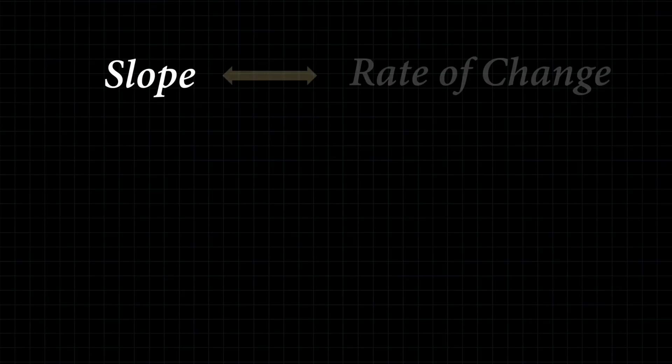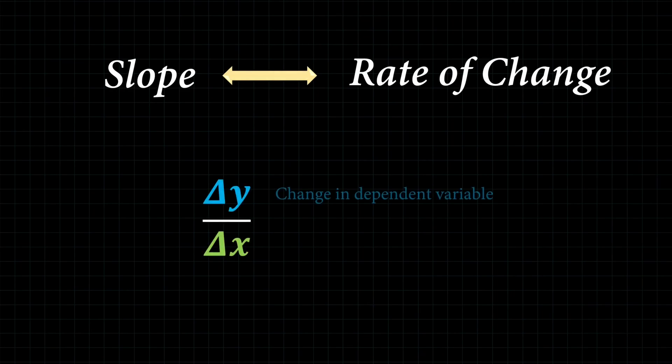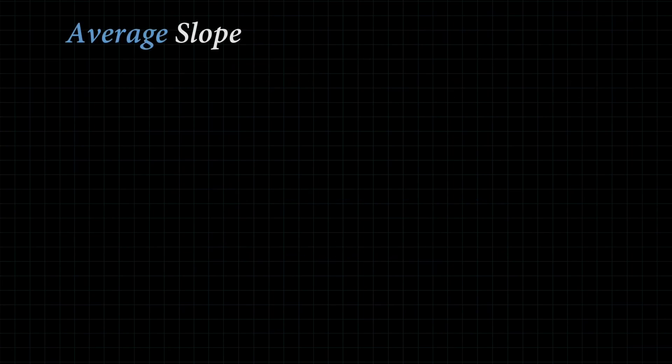The slope or rate of change is just the rise over run. But as you see in calculus, the derivative isn't just rise over run. The slope, also known as the rate of change, can be depicted as delta y over delta x — the change in the dependent variable over the change in your independent variable. But there are different types of slopes: namely, there's the average slope and there's the instantaneous slope.